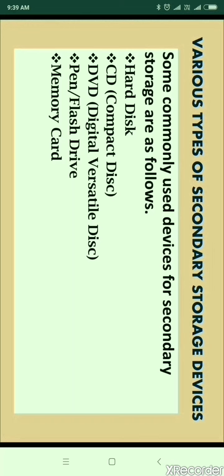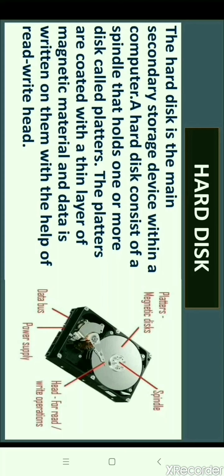Some commonly used devices for secondary storage are hard disk, CD, DVD, pen drive, and memory card. The hard disk is the main secondary storage device within a computer. It can store large amounts of data and is used to store user data permanently.